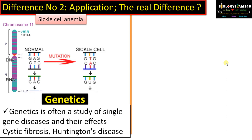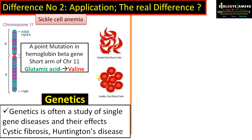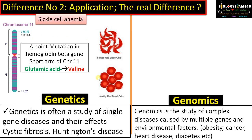In the case of sickle cell anemia, the codon GAG is replaced by GTG, ultimately forming an amino acid valine, whereas in the normal case it is glutamic acid. So genetics is the study of a single gene disease and its effects.